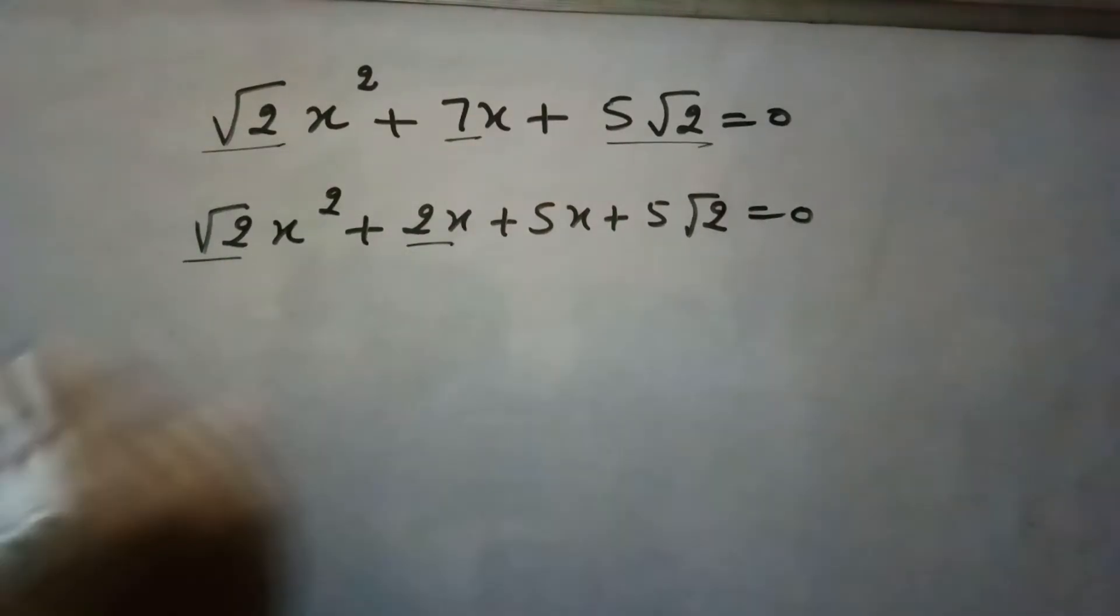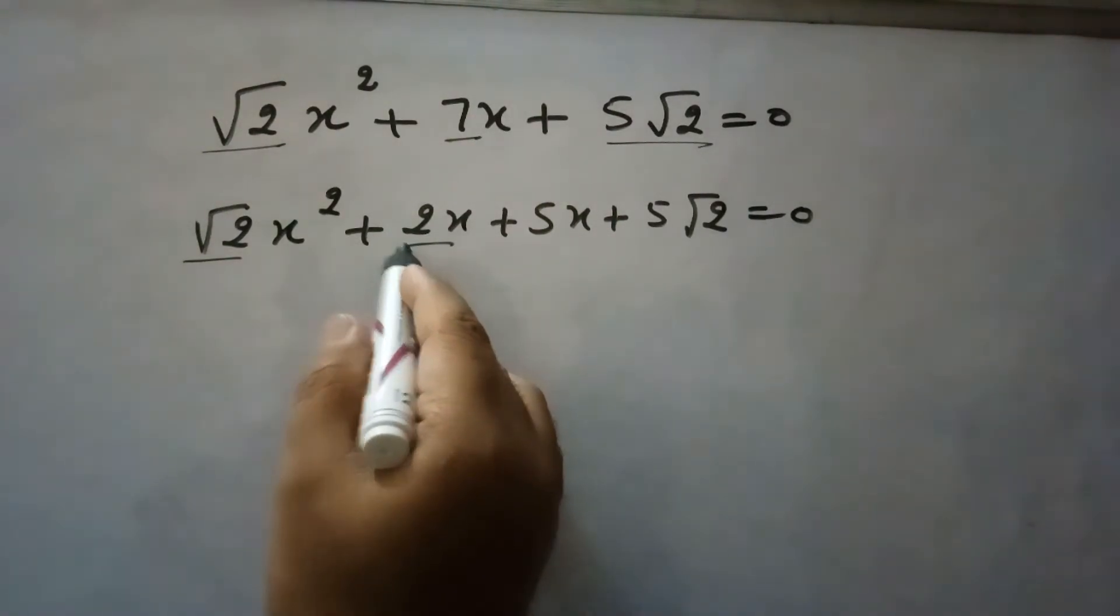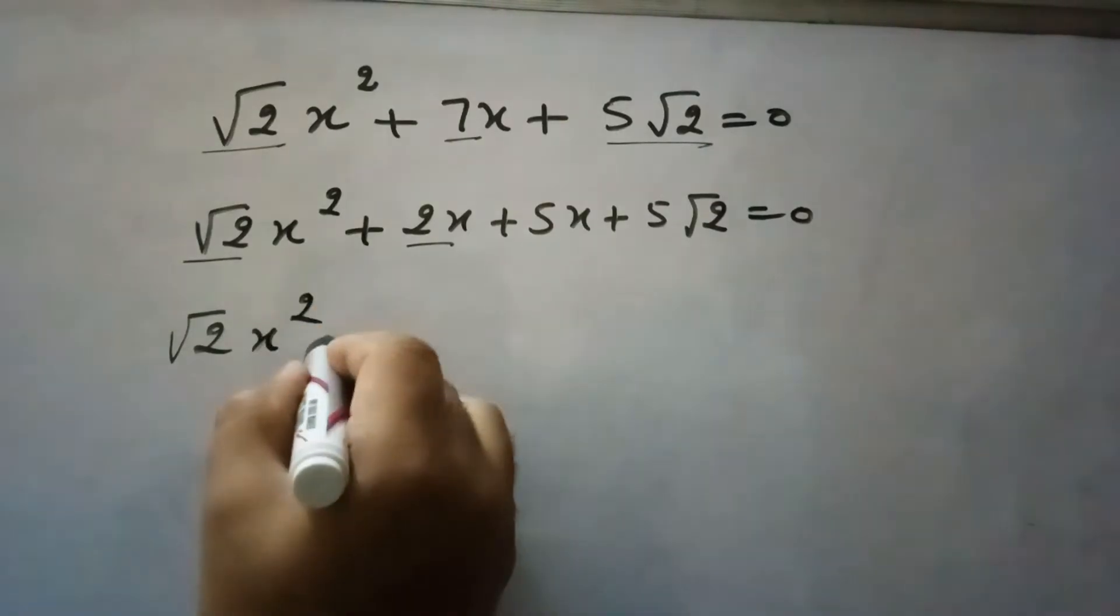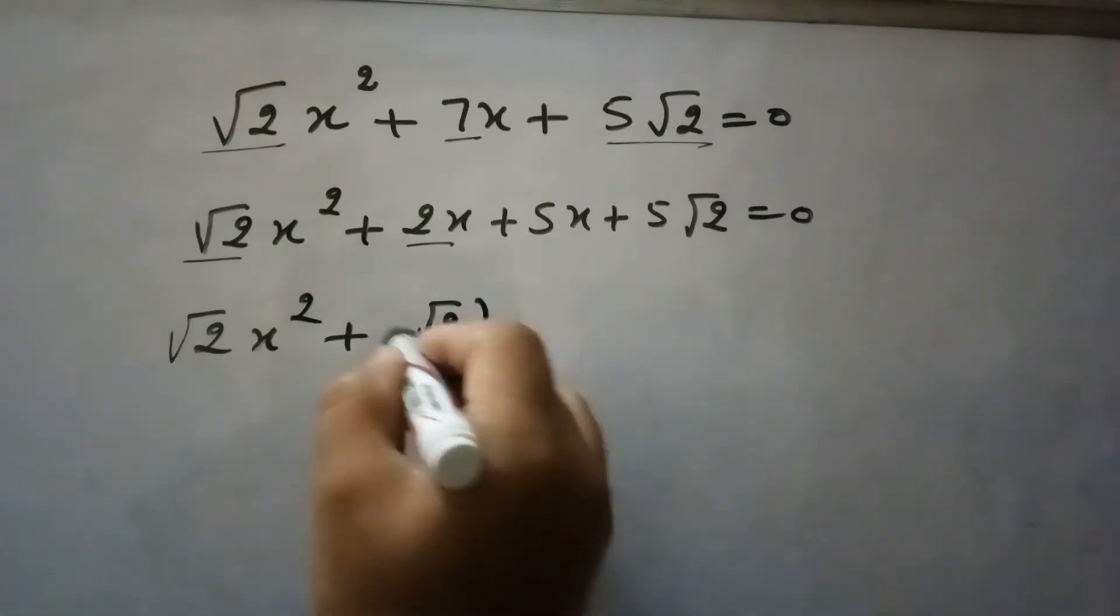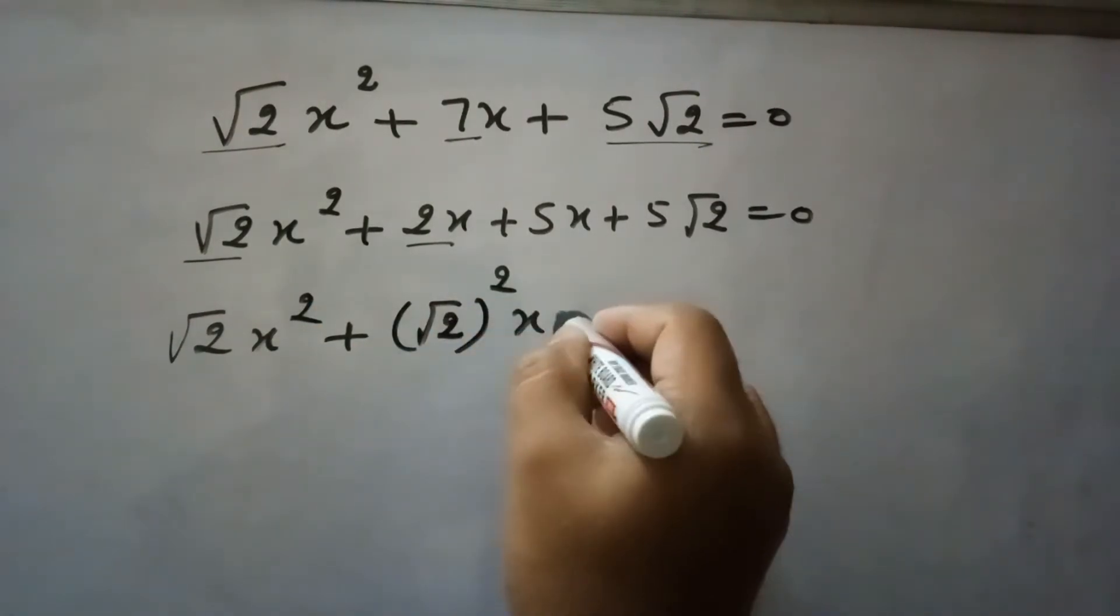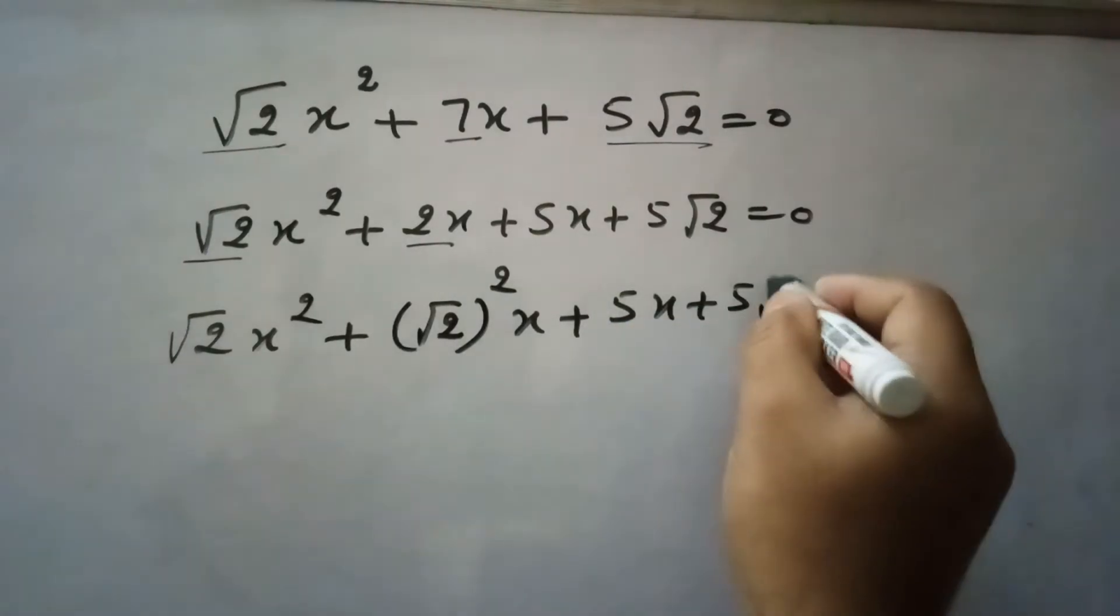Now here in these two, this two can be written as root 2x square and two can be written as root 2 whole square x plus 5x plus 5 root 2.